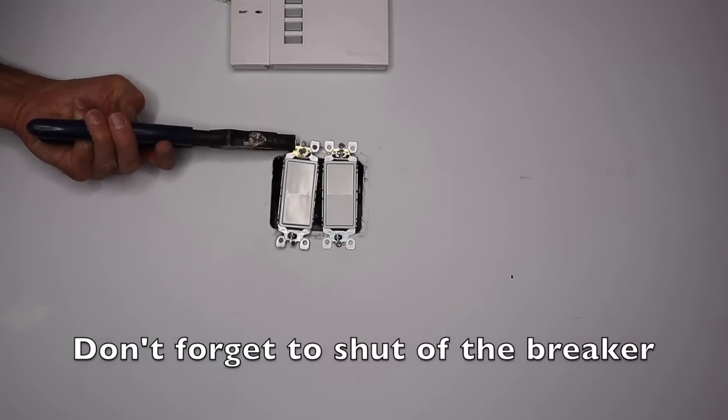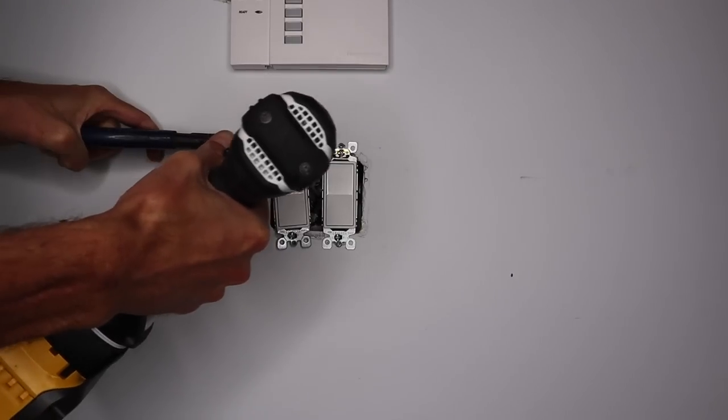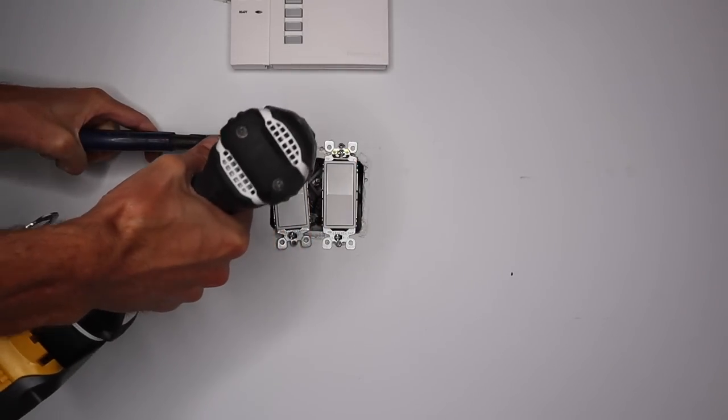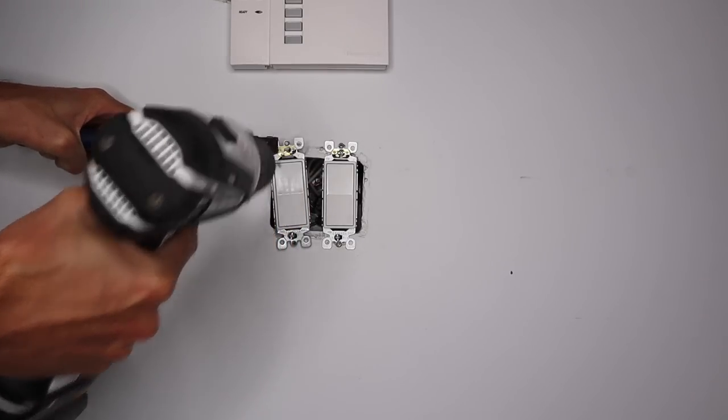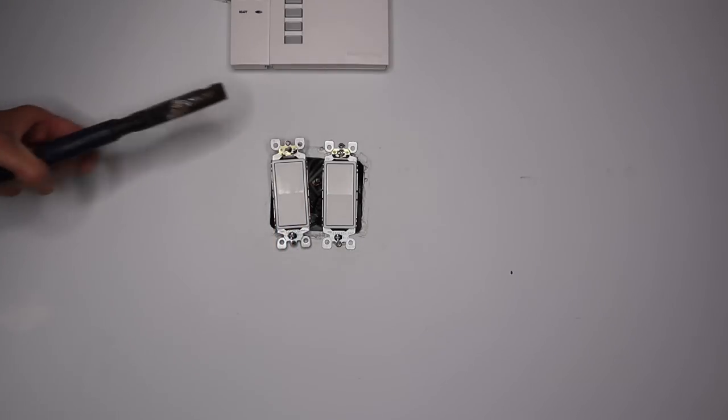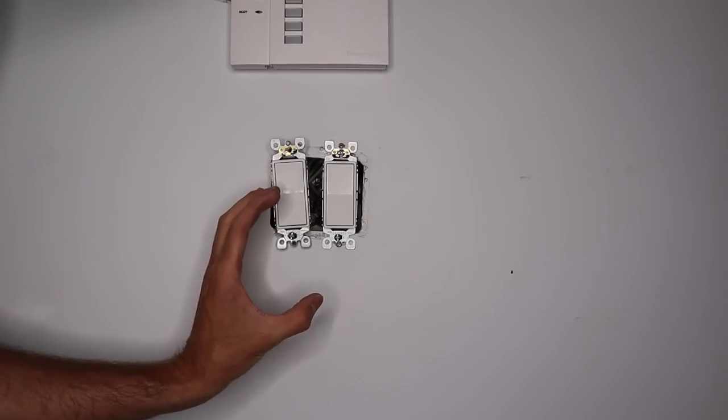So I took some pliers here, held on to it, took my drill bit here and then just reamed it out over and over to get a little more space up in that corner. So that's gonna help this receptacle sit down more curved.